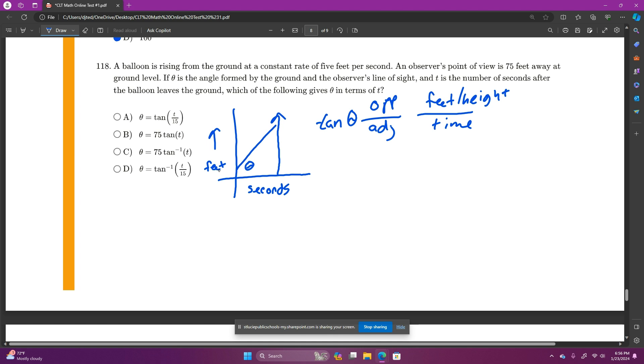So our opposite, we've made it in terms of t. We're going 5t, and we're 75 feet. So for every second t, they're going 15 feet. So tangent of theta would be t over 15, and they want to know which of the following gives theta in terms of t.